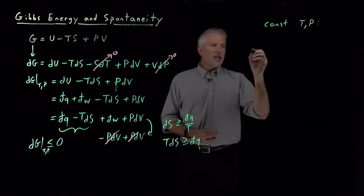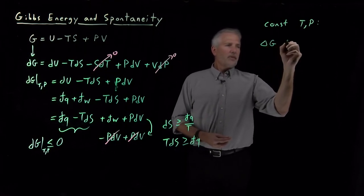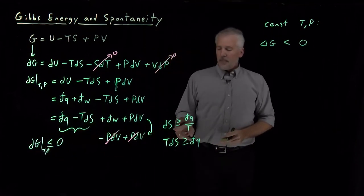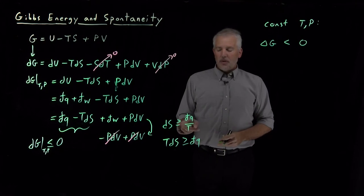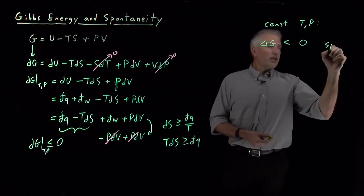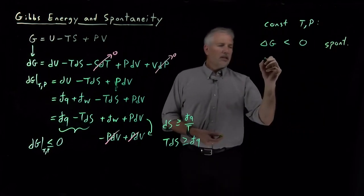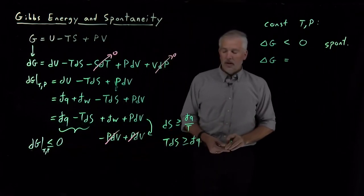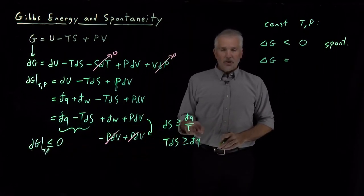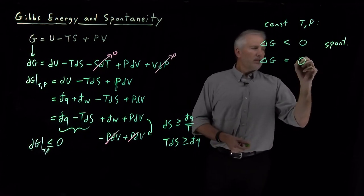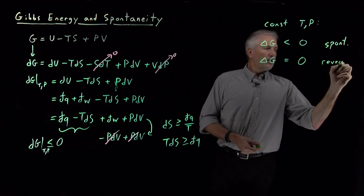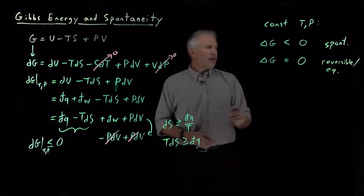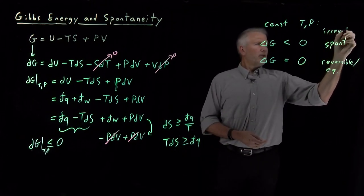Summarizing these statements: if the change in Gibbs free energy is negative, that means the same thing as when the change in entropy was larger than dq/T—that is for a spontaneous process. If the equality holds, if the change in Gibbs free energy is exactly zero, that must be true because dS equals dq/T, and that's true for a reversible or equilibrium process. Likewise, we could say irreversible or spontaneous process.